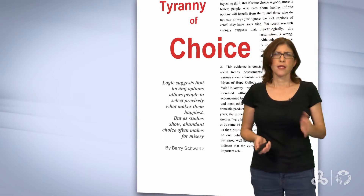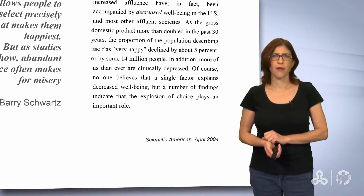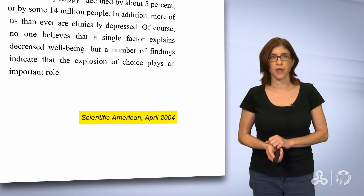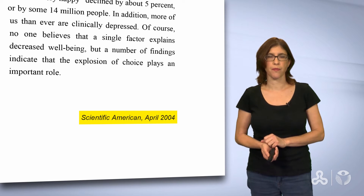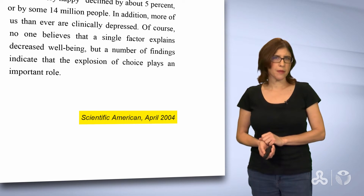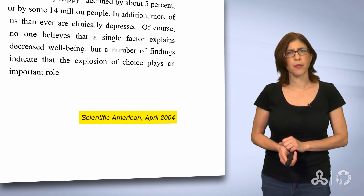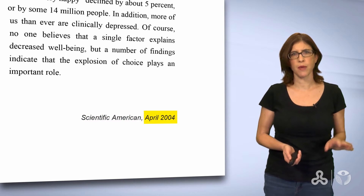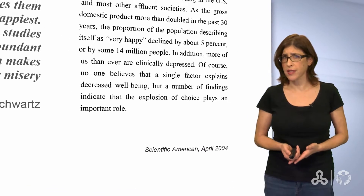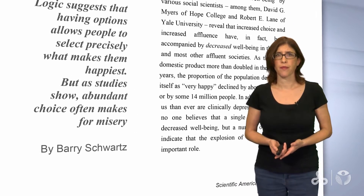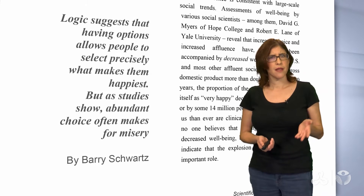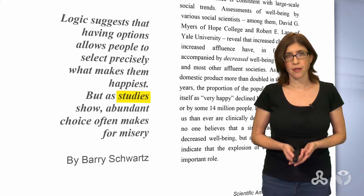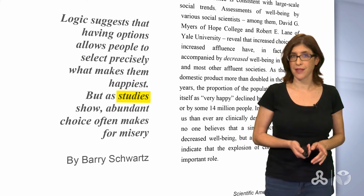Let's continue our pre-reading of the text by looking at the source: Scientific American, April 2004. This means that the text appeared in a journal that publishes only scientific work. It has to be based on research or empirical studies. This explains the writer's use of the word 'studies' in the sentence under the title — it's important in the text.